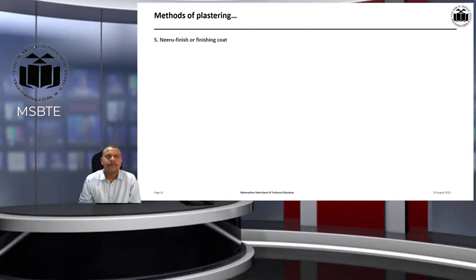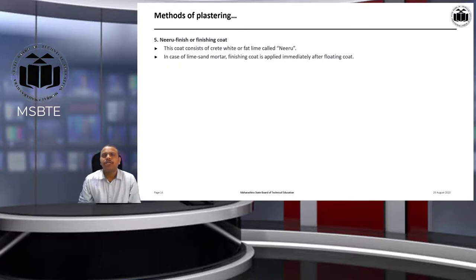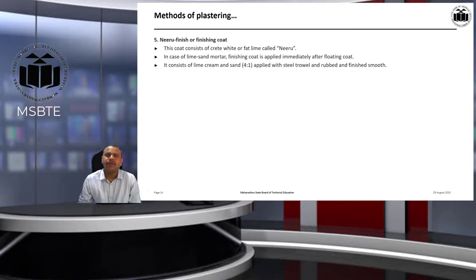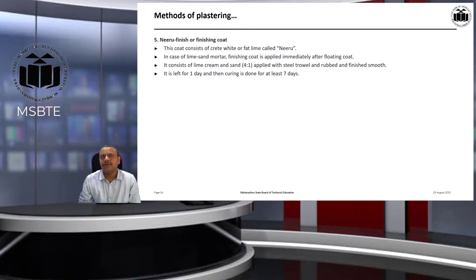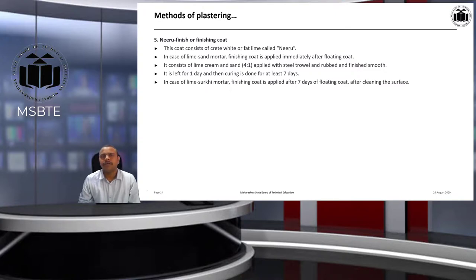The next method is Neeru finish or finishing coat. This coat consists of white or fat lime called Neeru. In case of lime-sand mortar, the finishing coat is applied immediately after the floating coat. It consists of lime cream and sand, usually in the ratio of 4:1, applied with a steel trowel and rubbed and finished smooth. It is left for 1 day and then curing is done for at least 7 days. In case of lime-surkhi mortar, the finishing coat is applied after 7 days of the floating coat, after cleaning the surface.